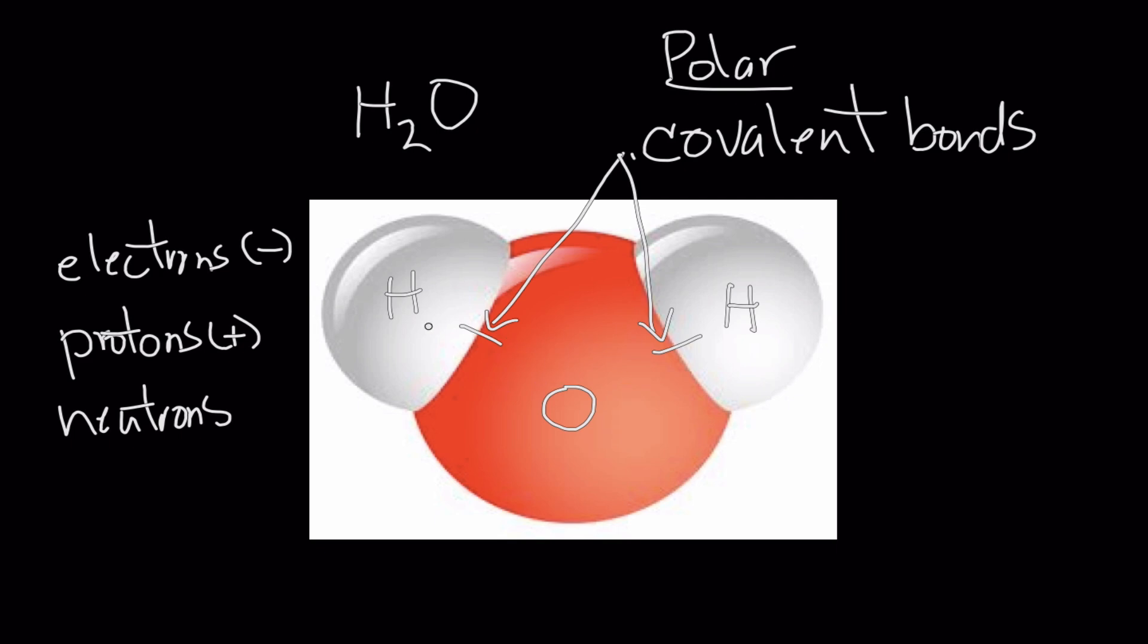If this oxygen atom is attracting the electrons to itself, it's getting more negativity. So that means this oxygen atom has a net negative charge associated with this end of the water molecule. And because the negativity is being pulled towards the oxygen, that leaves some positivity at the hydrogen ends. This makes the water molecule act a little bit like a magnet with a positive pole and a negative pole. The water molecule orients itself positive to negative like a little magnet, and this is happening because of the polar covalent bonds.